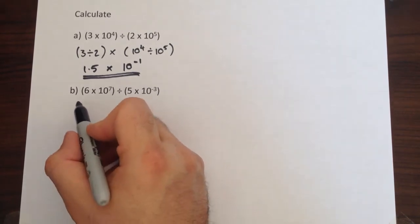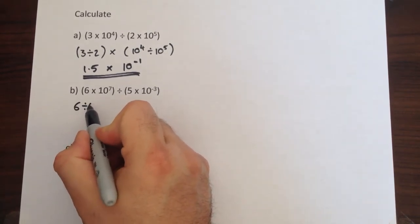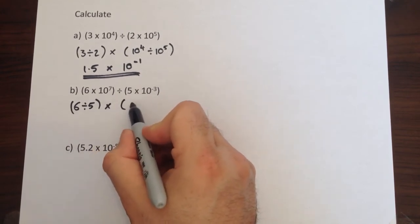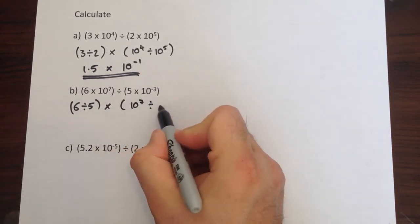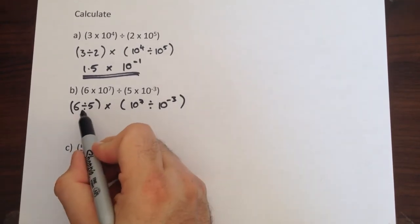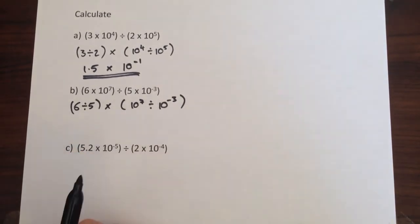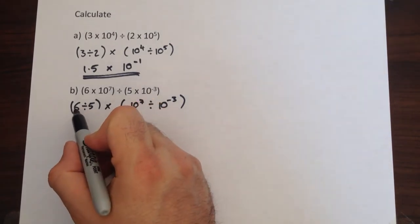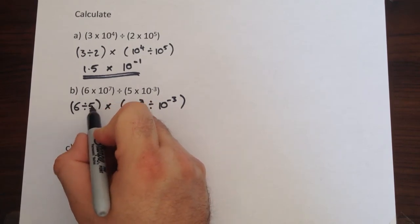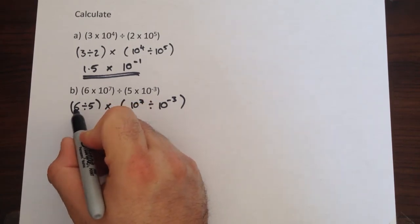So let's look at a similar method here. I'm going to do 6 divided by 5, and that's going to be multiplied by 10 to the 7 divided by 10 to the negative 3. Now this fairly straightforward calculation quite often catches people out because this will be on the higher paper. You should know 1 fifth is 0.2, so 6 fifths, which this is, 6 divided by 5 would be 1.2.